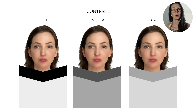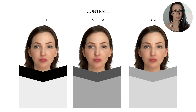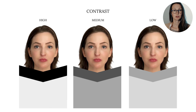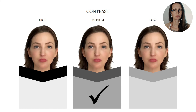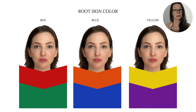Next is contrast — how high or low is the contrast between her hair and her skin tone? High contrast will be overpowering for her, while medium contrast will be just the right amount of energy between the colors to emphasize her features and help her look more radiant.